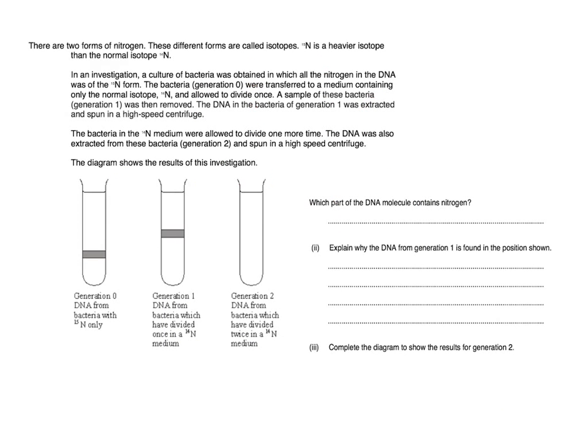Here's a question on the Meselson and Stahl experiment. They've given you the background to the experiment here. Then they start off with a simple knowledge question. Which part of the DNA molecule contains nitrogen? Here, they will accept either base, or adenine, thymine, cytosine, or guanine. Note, uracil would not be accepted here, because uracil is a base that is found in RNA, not DNA.